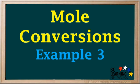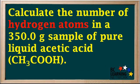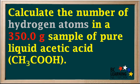This time, we'll do a mole conversion that requires three steps. We're asked to calculate the total number of hydrogen atoms in a 350 gram sample of pure liquid acetic acid, CH3COOH.